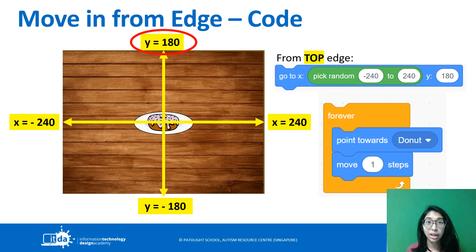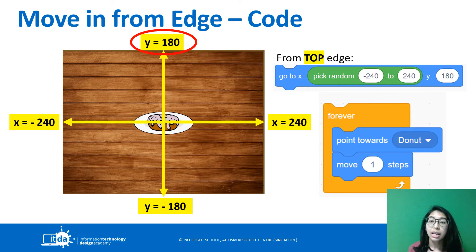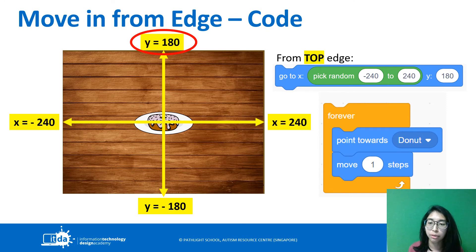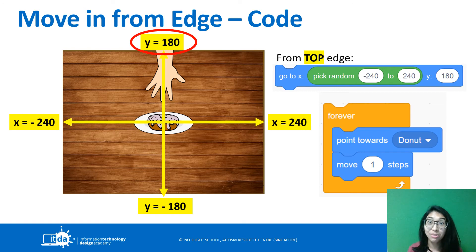For the top hand, we fix the top y position to 180, and make the game choose a random left and right x position. Then the hand is also going to point towards the donut and forever move towards it.